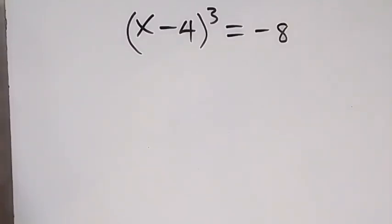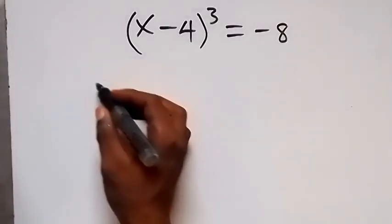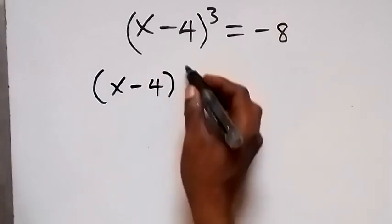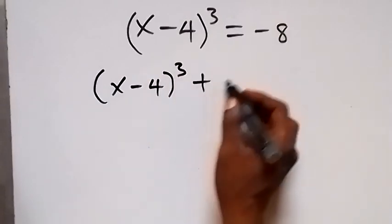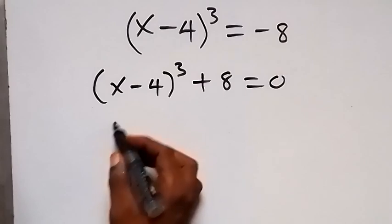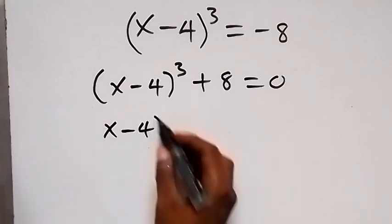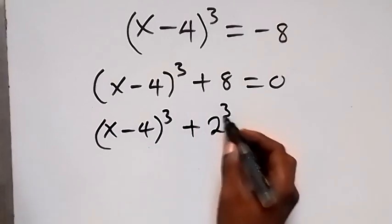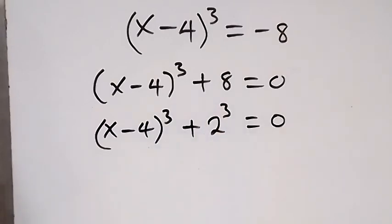Hello, you are welcome. How to solve this problem: x minus 4, raised to power 3, equals minus 8. Let's take minus 8 to the left side, so we have x minus 4 raised to power 3 plus 8 equals 0. Now let's express 8 as a number raised to power 3: x minus 4 raised to power 3 plus 2 raised to power 3 equals 0.